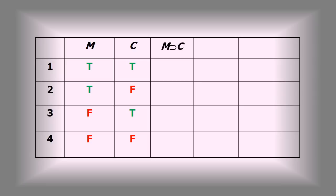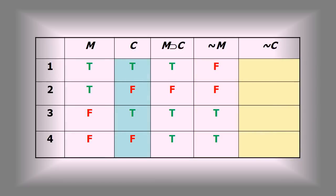Now I need a column to handle that horseshoe — I'll only put an F where M is true and C is false — and a column to handle the tilde M. Lastly, a column for tilde C for the conclusion. Notice: a column for each of the premises and a column for the conclusion. For tilde M, I use the M column and switch the values to the opposite. Same thing happens with tilde C. Once I've done this, I'm pretty well done with my truth table.